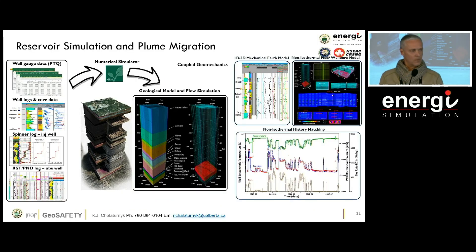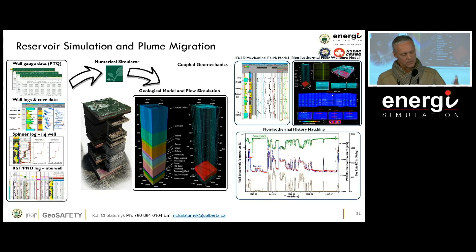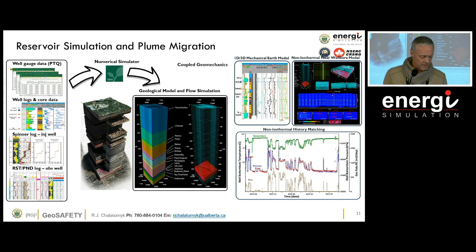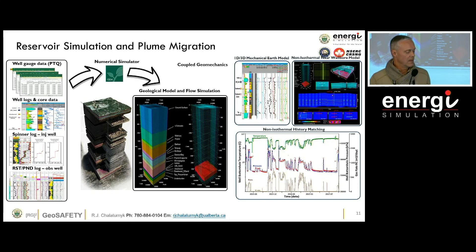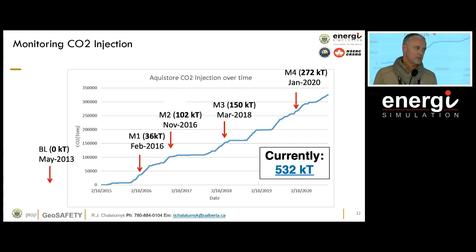We kind of know where the CO2 went. We did interpretation, logs, spinners, RST, pulse neutron logs, all the rest of it, and built a model using GEM, 1D and 3D mechanical earth models. We matched to really dynamic injection pressure. We have to include temperature — isothermal simulation is not something you want to do except maybe at the screening stages anymore.